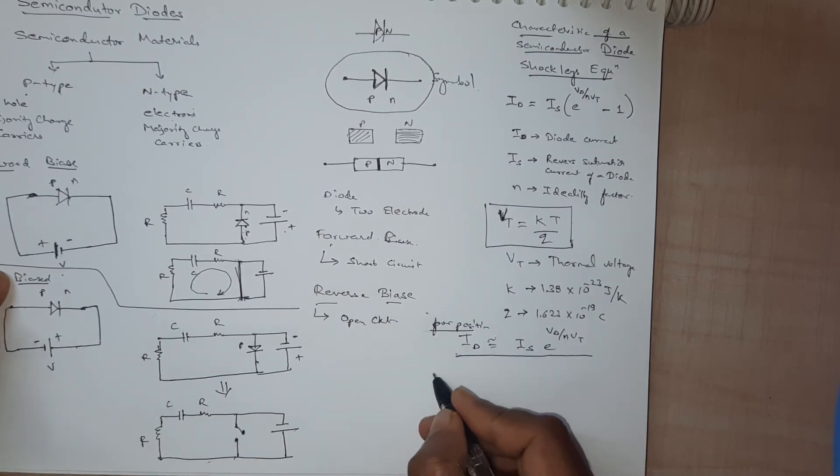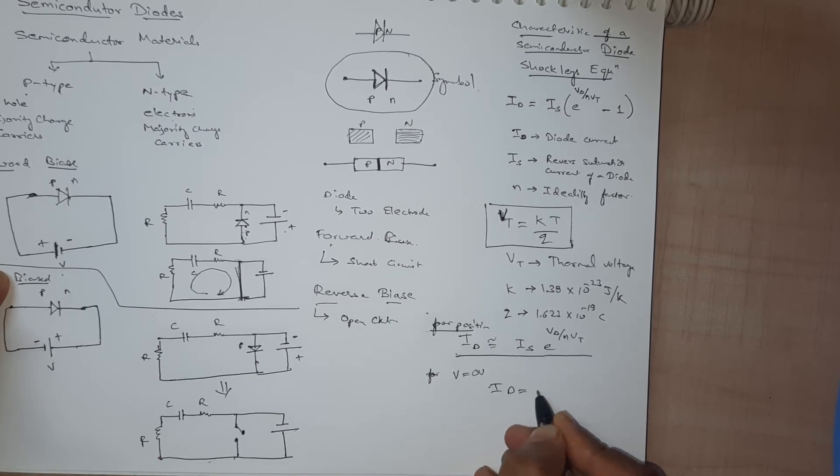And for negative or you can say for v is equal to 0 volt, your id is equal to 0, your diode current is also 0.